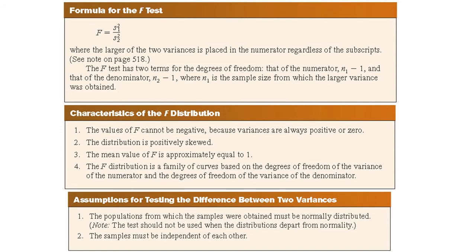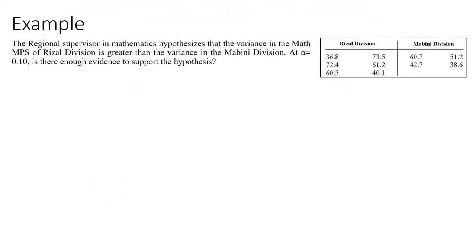Let's have an example. A regional supervisor in mathematics hypothesizes that the variance in the math MPS of Rizal division is greater than the variance in the Mabini division. At alpha equals 0.10, is there enough evidence to support the hypothesis? For the Rizal division, we have: 36.8, 72.4, 60.5, 73.5, 61.2, 40.1. For the Mabini division: 60.7, 42.7, 51.2, and 38.6.